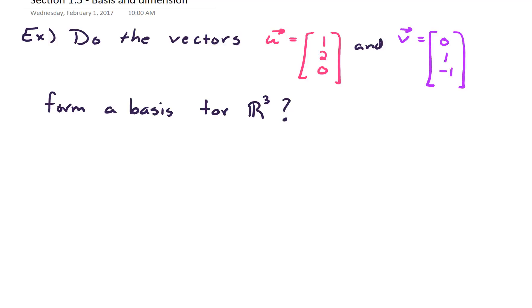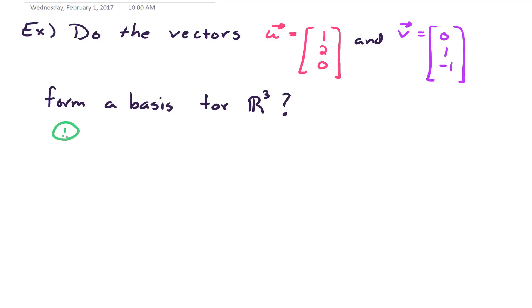So two criteria we need to satisfy to be a basis. Number one we need to check that the span of u, v gives us all of R3, so that would need to be satisfied. And the second criteria we would need is we would need u and v to be linearly independent.